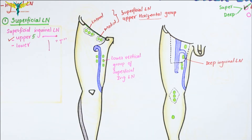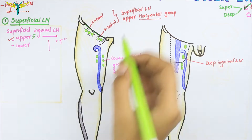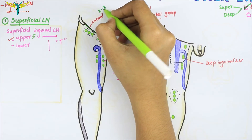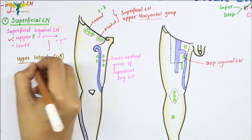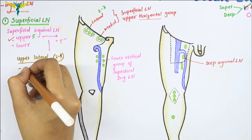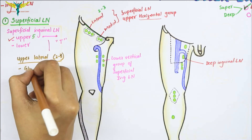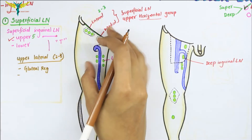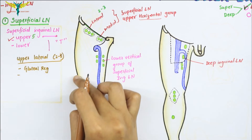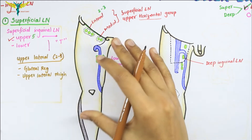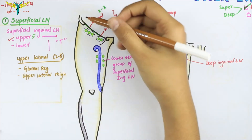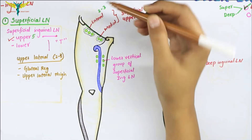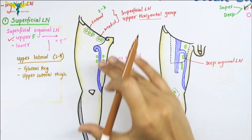The lateral group of lymph nodes consists of two to three nodes, and they receive lymph from the gluteal region, the upper part of the lateral side of the thigh, the flank region, and the back of the abdominal wall below the umbilicus.